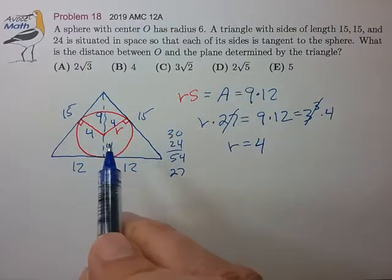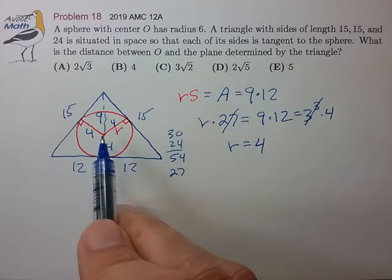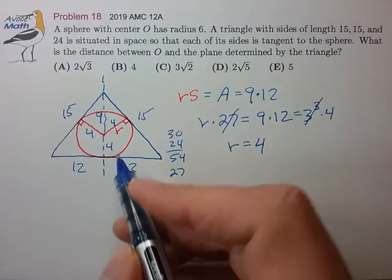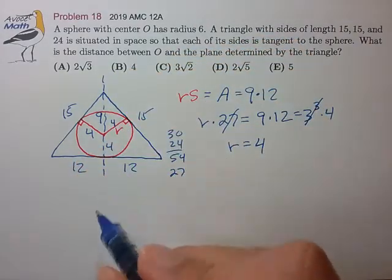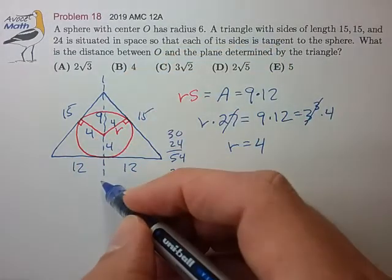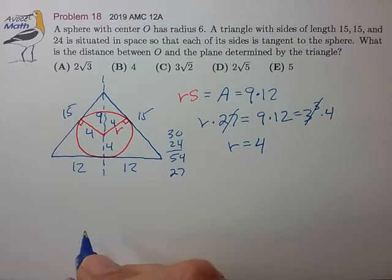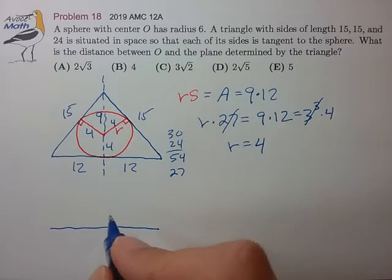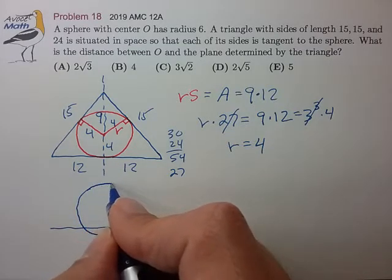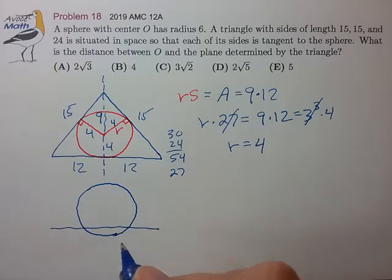And now let's take a look at what this three-dimensional figure looks like along the plane of the altitude. So if we chop the sphere along this cross-section, what we're going to find is that we have the plane of the triangle. We're going to have our sphere dipping below the plane of the triangle.